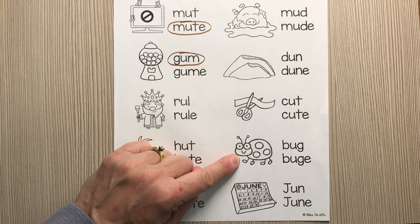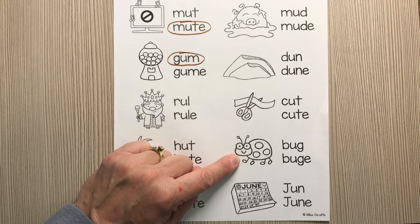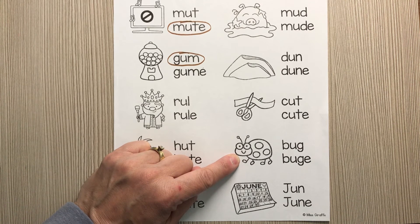This is a bug — B-U-G. One of the words says 'bug' and one of the words says 'buge.' Find your word that says 'bug' and circle the word that says 'bug.'